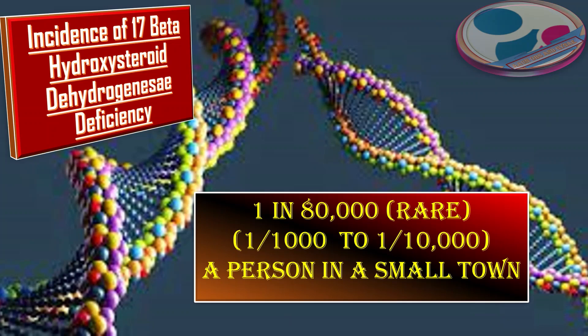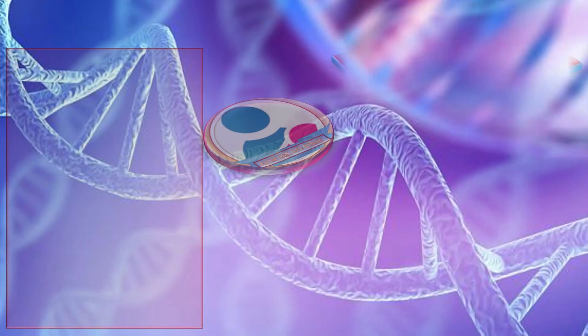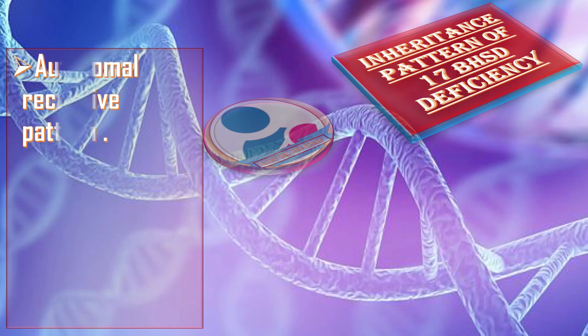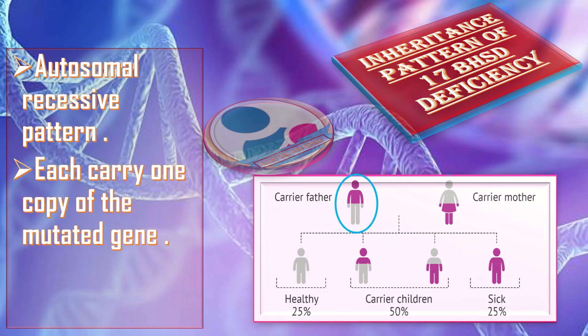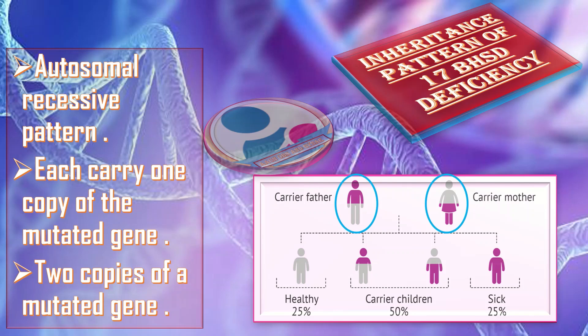By rare, we mean that it is present in the range of 1 in 1,000 to 1 in 10,000 people — approximately one person in a small town may be affected. This condition is inherited as an autosomal recessive disorder, which means both copies of the gene in each cell have mutations. The parents each carry one copy of the mutated gene but typically do not show signs or symptoms. Individuals with two mutated copies are affected.